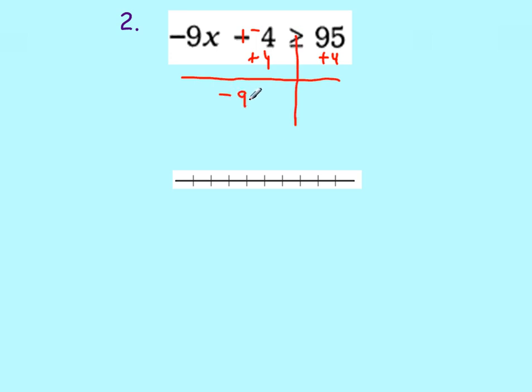Solve that problem. We get negative 9x is greater than or equal to 99. Now, we're going to divide by negative 9. Now, we're dividing by a negative. A negative is in our denominator. So now we have to flip the sign. So we're going to flip the sign.